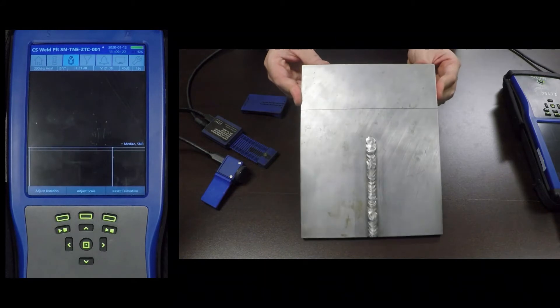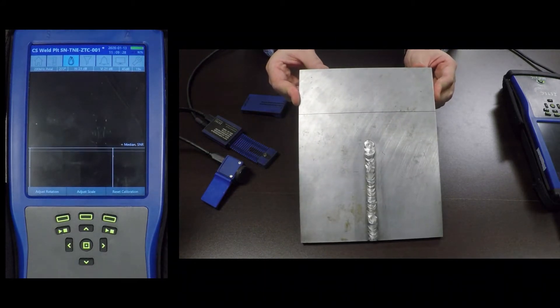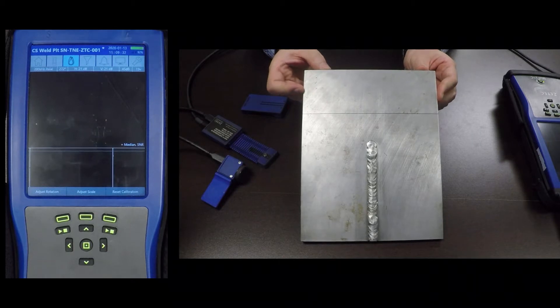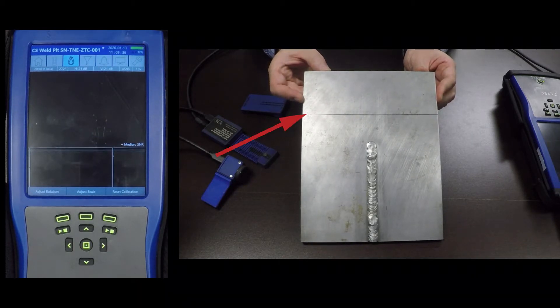Here I have a carbon steel plate with a weld bead down the center. It has a transverse groove going across the plate that can be used to calibrate the probe.